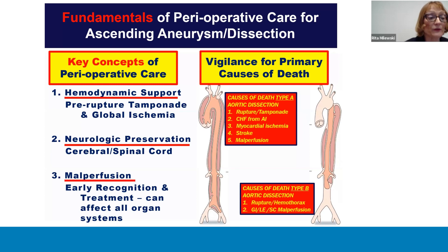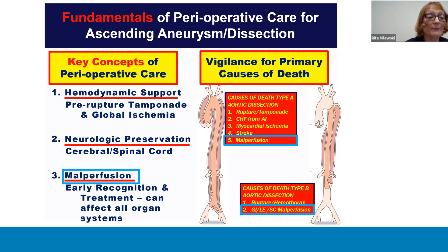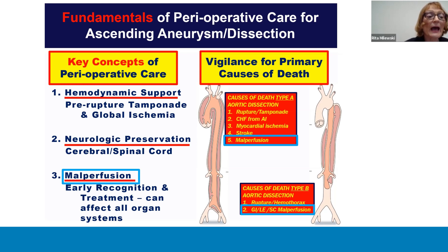The common pathophysiology is malperfusion of end organs, which may include global malperfusion due to rupture or tamponade, cardiac malperfusion due to shearing of the coronaries, brain malperfusion leading to stroke, spinal cord malperfusion leading to paraplegia, abdominal and renal malperfusion, and peripheral vascular malperfusion leading to limb ischemia.